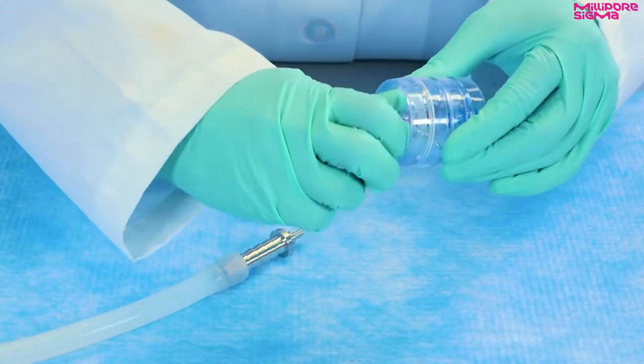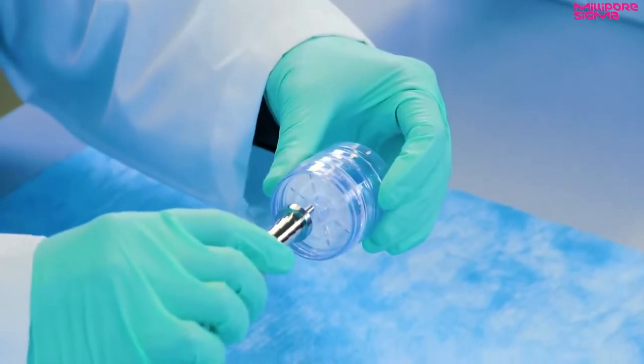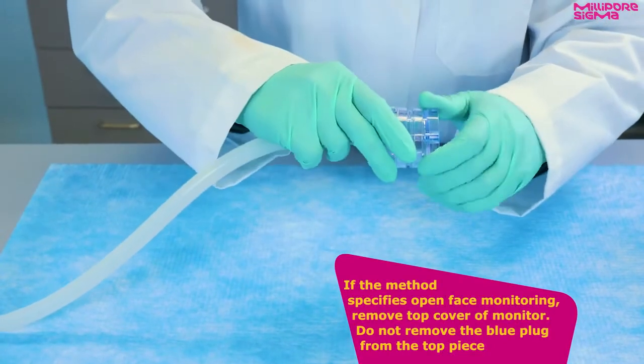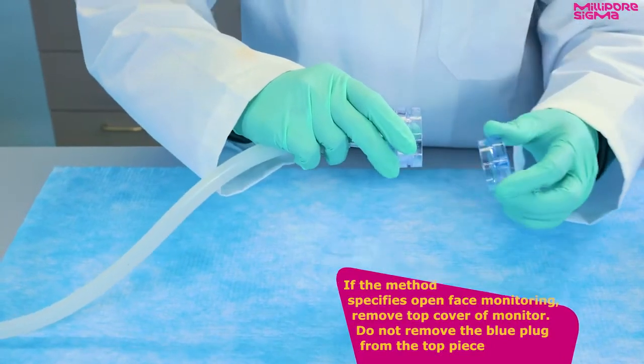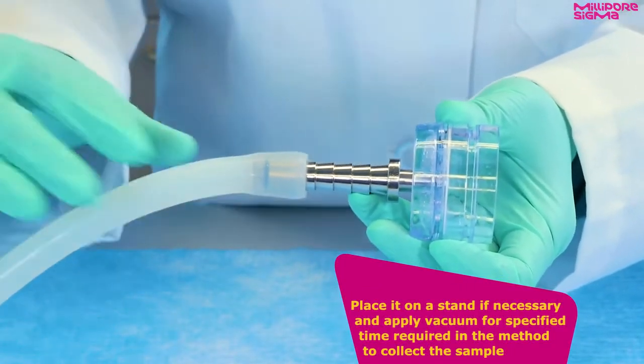Once the flow limiting orifice is connected to the vacuum source, remove the bottom red plug from the monitor and insert the luer connector end of the aerosol adapter. If the method specifies open face monitoring, remove the top cover of the monitor. Do not remove the blue plug from the top piece.